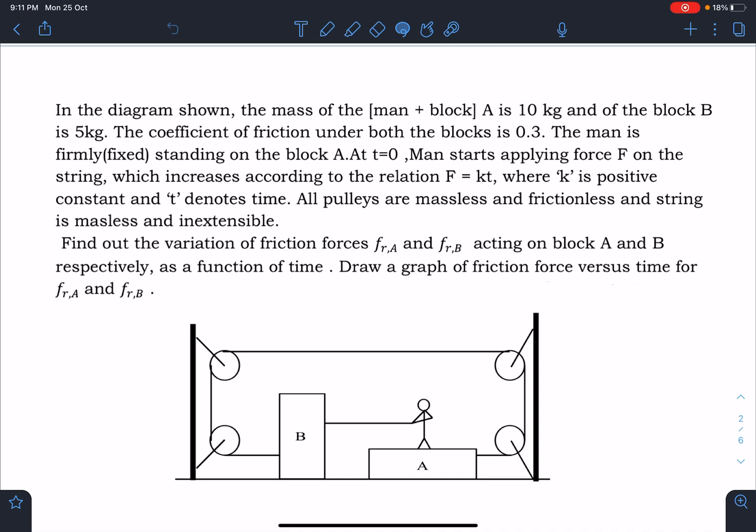At t=0, the man starts applying force F on the string which increases according to the relation F=kt, where k is a positive constant and t denotes time. All pulleys are massless and frictionless and string is massless and inextensible.